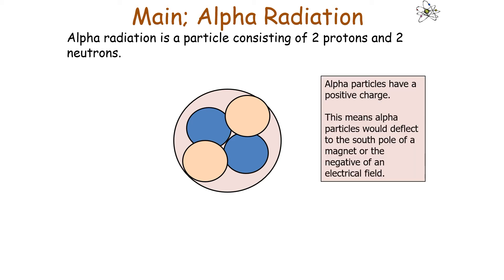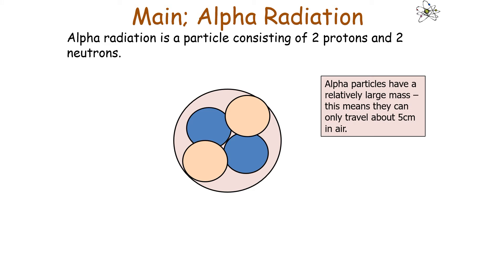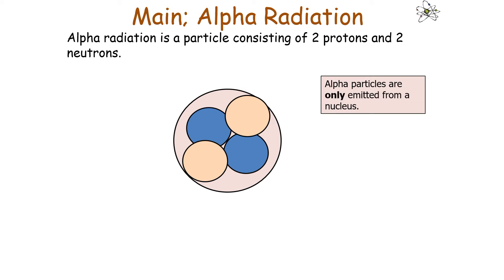Alpha radiation is the release of an alpha particle and occurs in heavy elements like uranium and radium. It is made of 2 neutrons and 2 protons, giving it an overall charge of plus 2 and a mass of 4 atomic mass units. Because it has a positive charge, alpha particles would deflect towards the south pole of a magnet or the negative of an electrical field, as opposites attract. The alpha particle has a relatively large mass, making it highly ionizing, but it can only travel about 5 centimetres in air and is absorbed by materials like paper or anything denser. Alpha particles are only emitted from a nucleus.